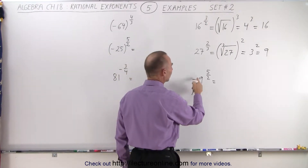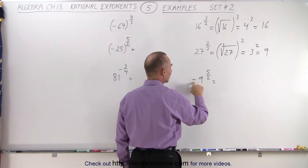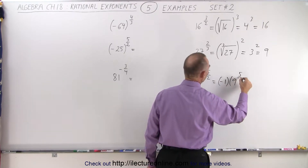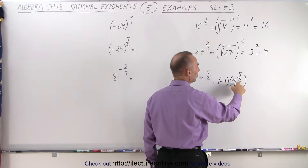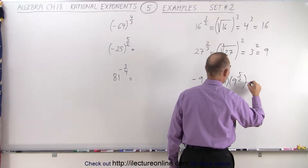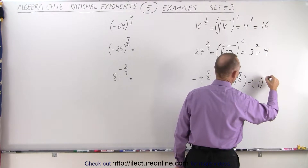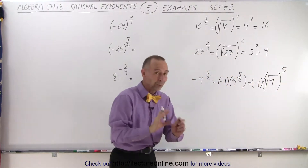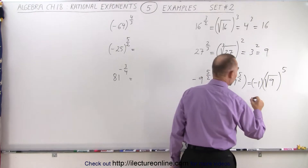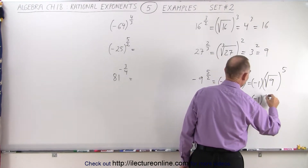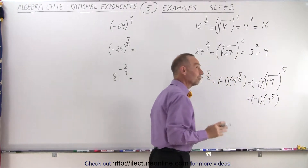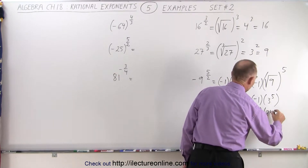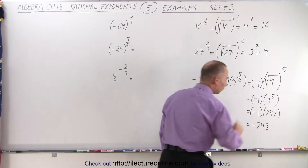What if we have a negative in front? Since there's no parentheses, the exponent does not apply to the negative. So this can be written as negative 1 times 9 to the 5 halves power. The denominator in the exponent is the root and the numerator is the power, so this is negative 1 times the square root of 9 raised to the fifth power. The square root of 9 is 3, so that's negative 1 times 3 to the fifth power. 3 to the fifth power is 243, so the result is negative 243.